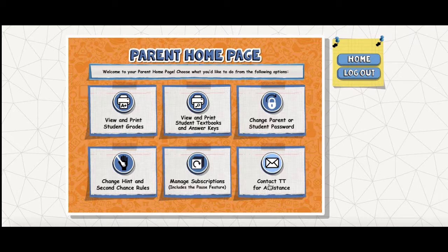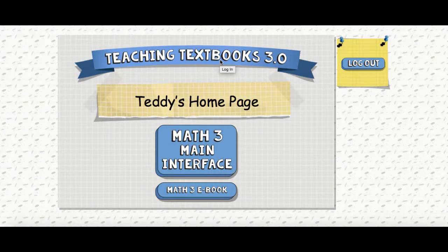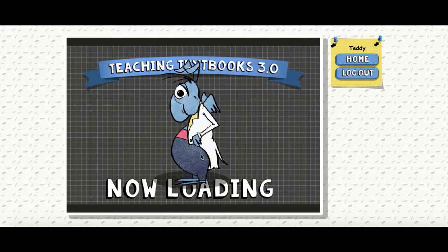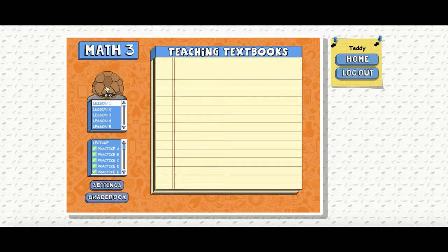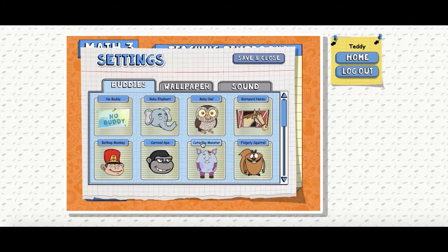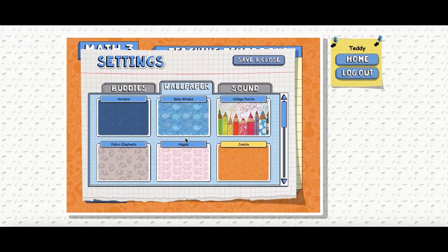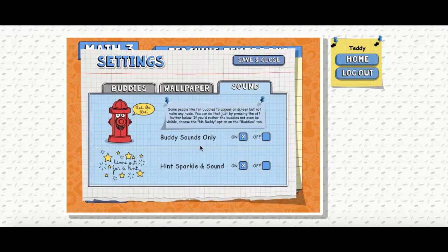Here you manage your subscriptions and here you contact Teaching Textbooks. Now here is the student homepage — you can opt to go to the e-book or go straight to the interface. We'll go back to lesson one. These are your buddies and you can change them; they do a little bit of moving and ask if you want a hint. Your student has settings where they can pick buddies, change their wallpaper, and toggle sounds on or off.